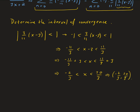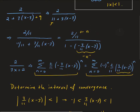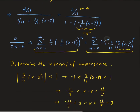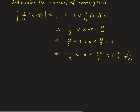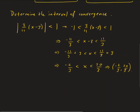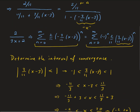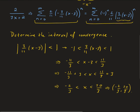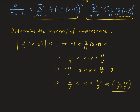We don't need to test the endpoints here because this is based on the geometric power series, which doesn't converge at the endpoints — for negative 1 and 1. So we don't need to check them. That's our solution: we found our geometric power series and the interval of convergence.